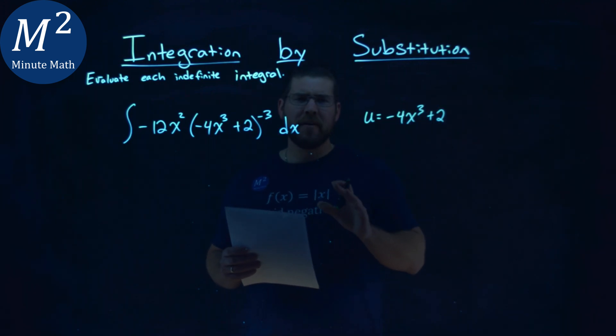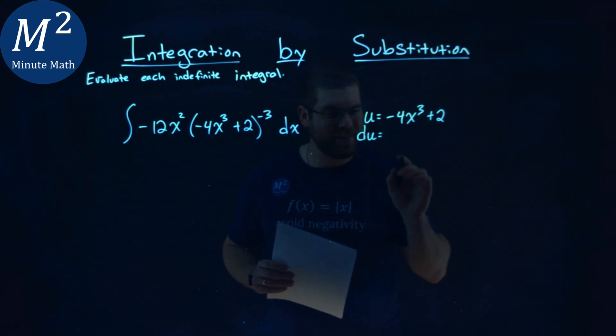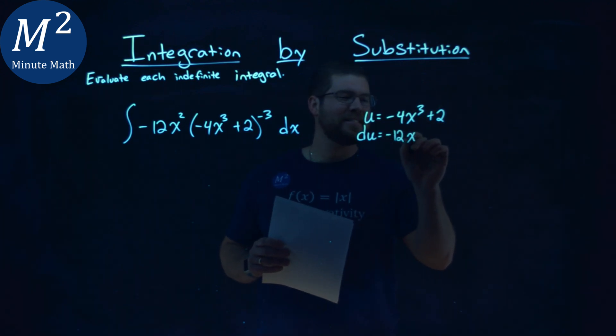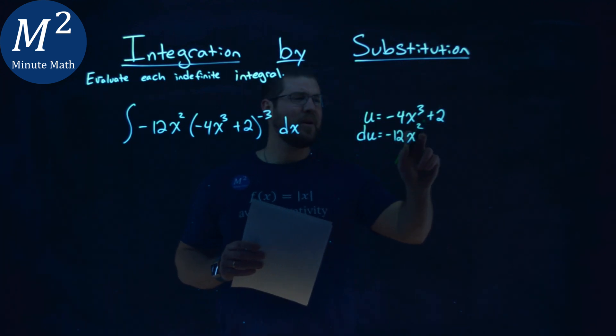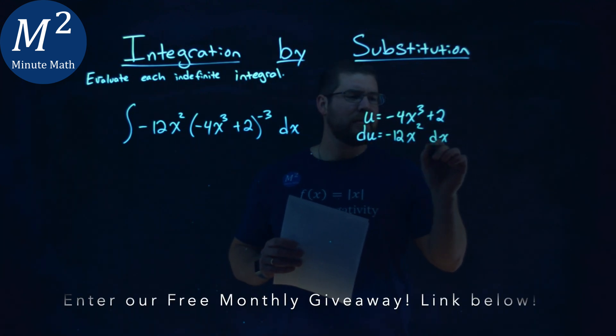Now we want to find our du value, the derivative. So 3 times negative 4 is negative 12x² - the squared comes from taking the derivative. The derivative of the constant is 0, and we have a dx here.